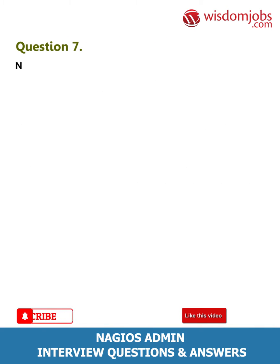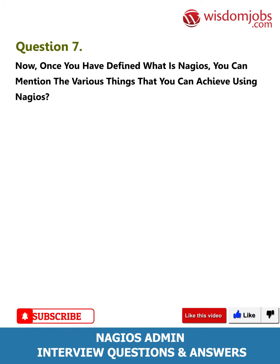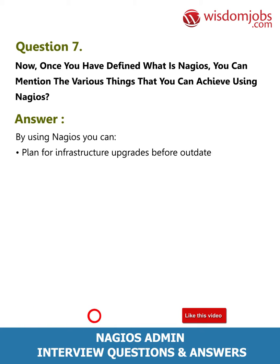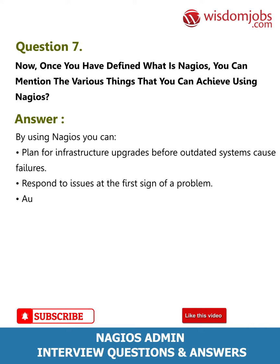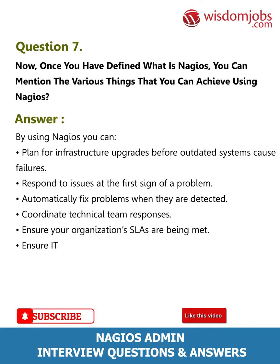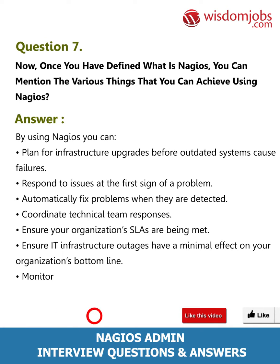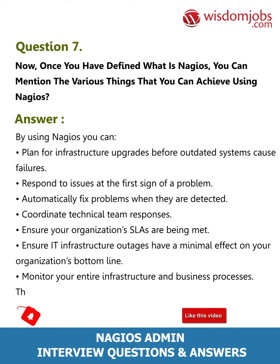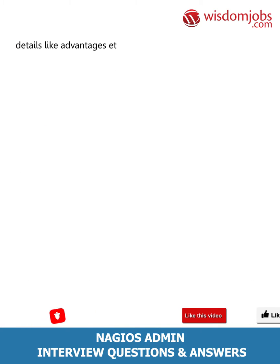Question 7: What are the various things you can achieve using Nagios? Answer: By using Nagios, you can plan for infrastructure upgrades before outdated systems cause failures, respond to issues at the first sign of a problem, automatically fix problems when they are detected, coordinate technical team responses, ensure your organization's SLAs are being met, ensure IT infrastructure outages have a minimal effect on your organization's bottom line, and monitor your entire infrastructure and business processes.